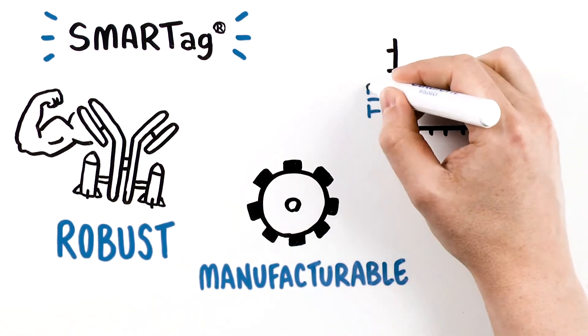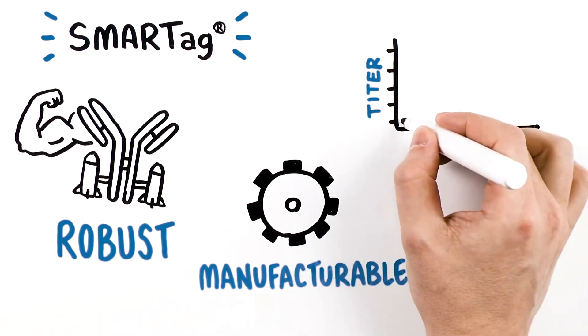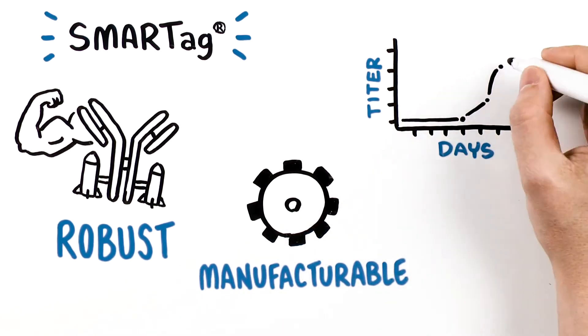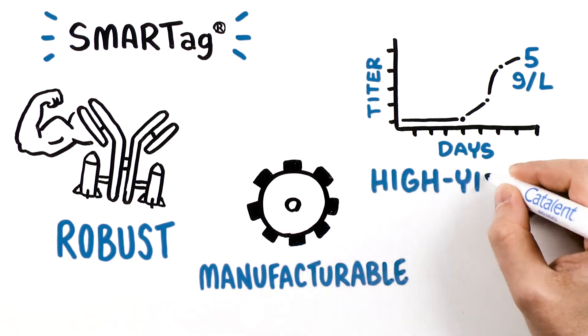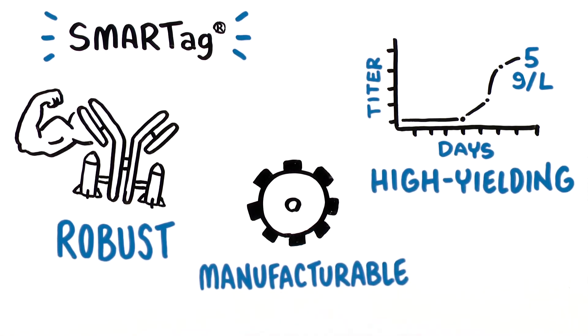With antibody titers of up to 5 grams per liter, the antibody is produced ready to conjugate in a one-step, high-yielding, completely site-specific process.